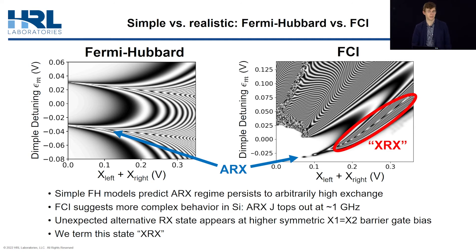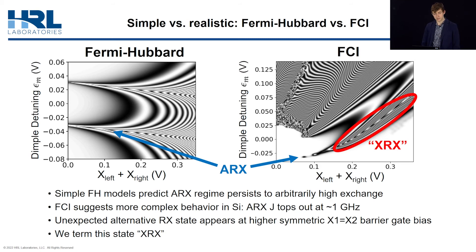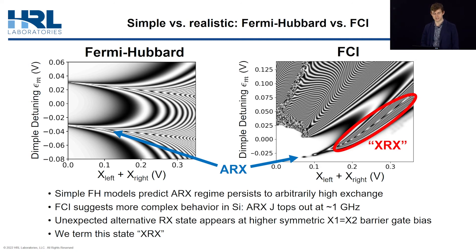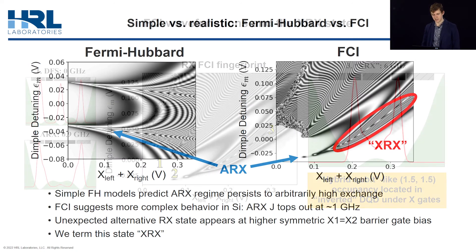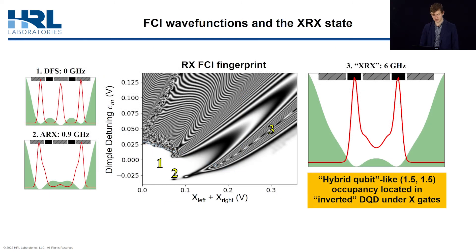In general, at higher X-gate bias, Fermi-Hubbard breaks down compared to FCI, or at least it is incapable of modeling exchange, as the electrons tend to reposition themselves underneath the barrier gates. In this regime, we see the formation of an unexpected seam of fast exchange, which we refer to as XRX.